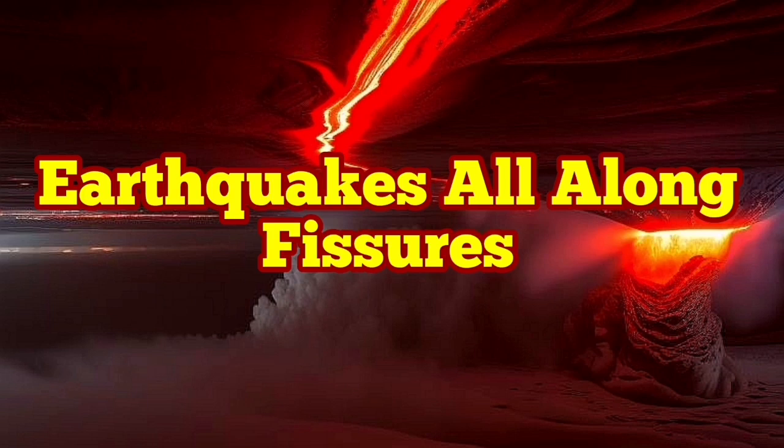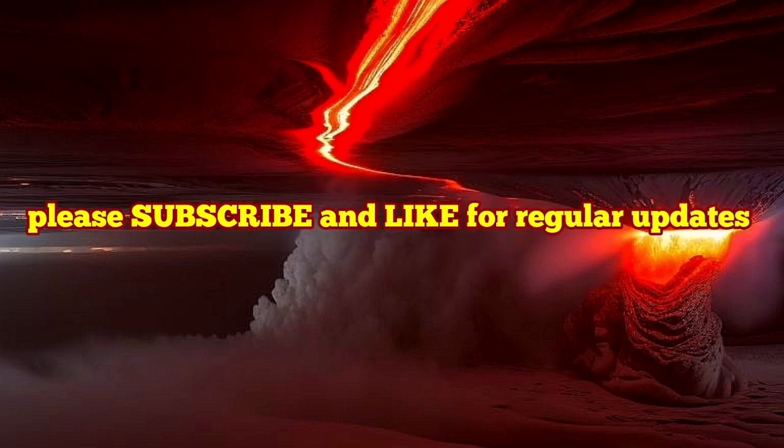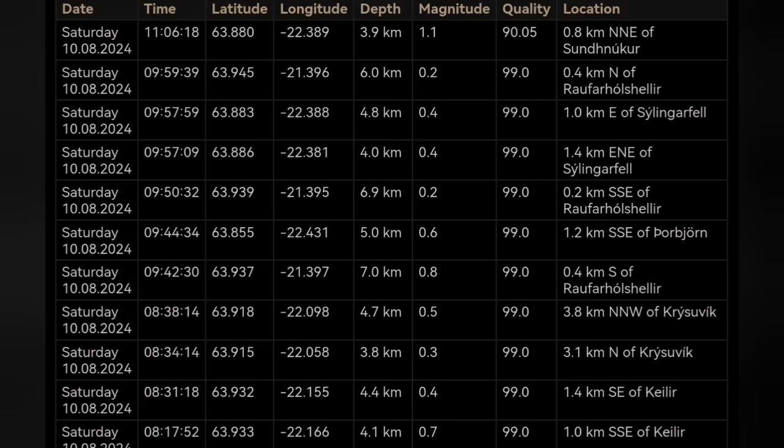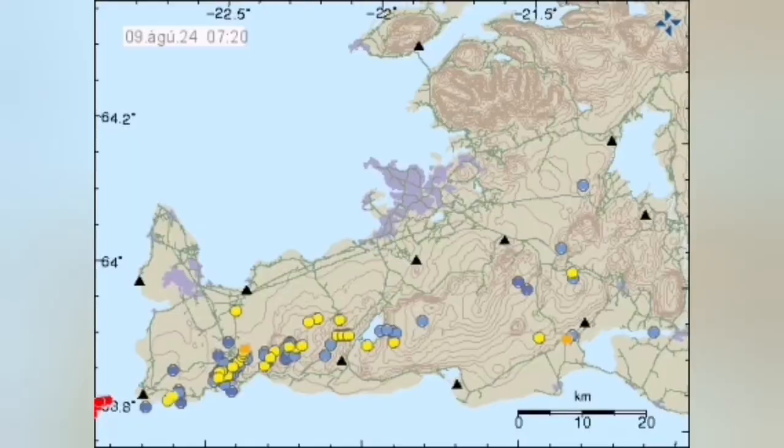We are seeing a line of earthquakes along the fissure, or we should say the dike that is at depth. And these are the earthquakes in the Svartseng volcanic system of the Reykjanes Peninsula of Iceland.